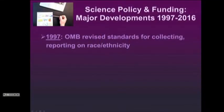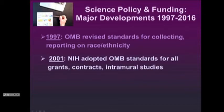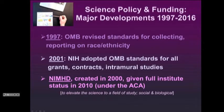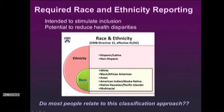Finally, a few words about science policy and funding. In 1997, the Office of Management and Budget revised standards for collecting and reporting on race and ethnicity. In 2001, the National Institutes of Health adopted these standards and required all funded researchers — intramural and extramural — to follow them. In 2000, the National Institute for Minority Health and Health Disparities was first created and given full institute status in 2010, leading to the required race and ethnicity reporting that researchers must now adhere to.